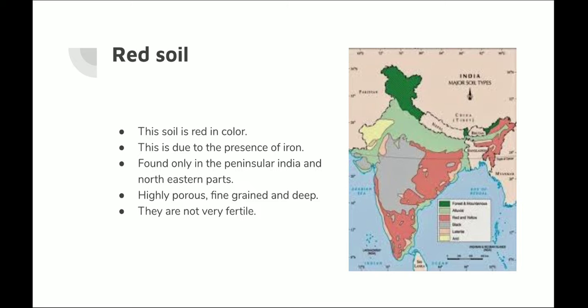Next is red soil. You can see the red portion on the map. This soil is red in color due to the presence of iron — it has high iron content. This soil is highly porous, meaning it cannot hold water; whenever water is put in it, the water seeps through to the underground. It is fine-grained but not very fertile, so very few agricultural products grow here and a lot of artificial fertilizer is needed to grow crops on this land.